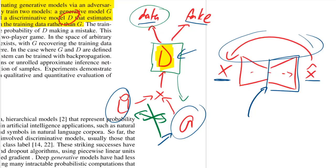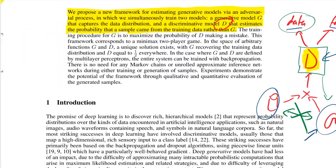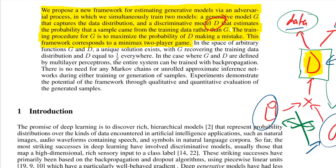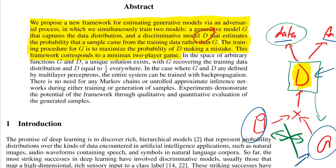The training procedure for G is to maximize the probability of D making a mistake. This framework corresponds to a minimax two-player game. The paper is very much focused on convincing you that something sound is happening here, because at that time you would have said there is no way. In the space of arbitrary functions G and D, a unique solution exists with G recovering the training data distribution and D equaling one half everywhere.